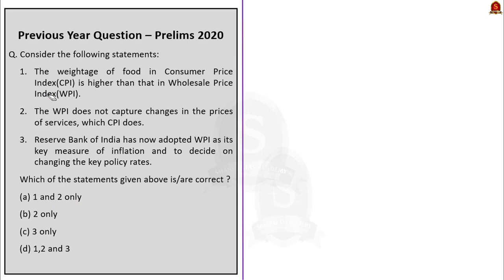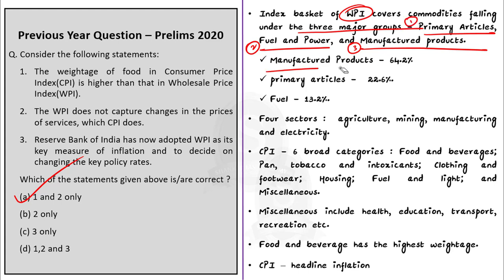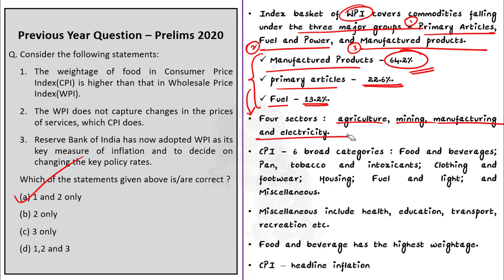Now consider statements about CPI and WPI. The correct option is A. The WPI index basket covers commodities under three major groups: primary articles, fuel and power, and manufactured products. Manufactured products have the highest weightage of 64.2%, followed by primary articles at 22.6%, and fuel and power at 13.2%. WPI covers prices from four sectors: agriculture, mining, manufacturing, and electricity. Note that the services sector is not covered under WPI.